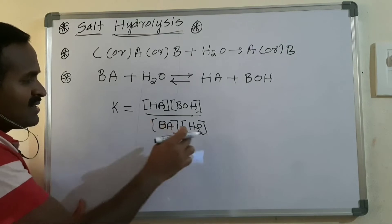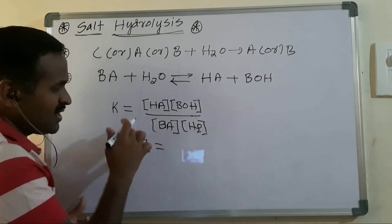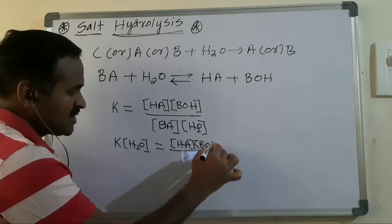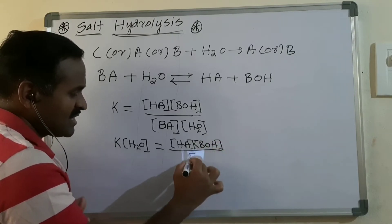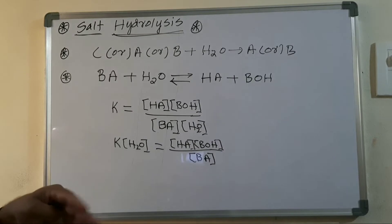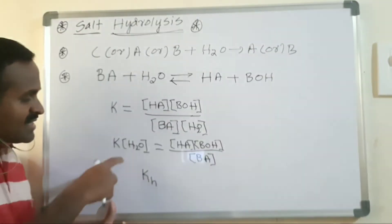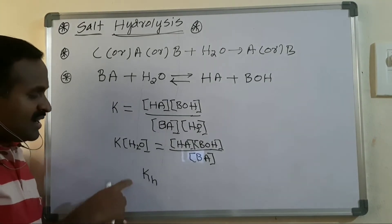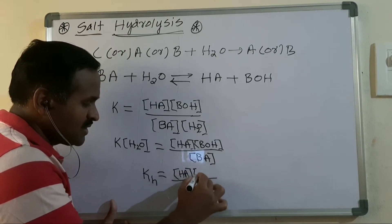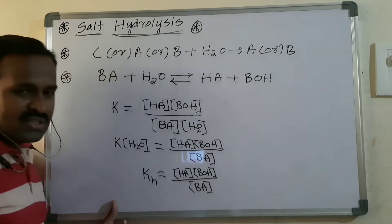Rearranging, K multiplied by the concentration of H₂O gives a new constant. This is called the hydrolysis constant Kh. So Kh equals the concentration of HA multiplied by the concentration of BOH, all divided by the concentration of salt BA.